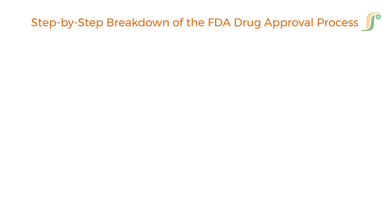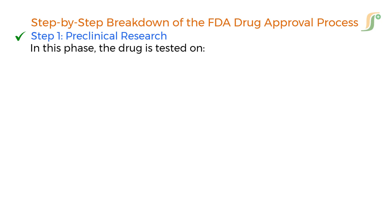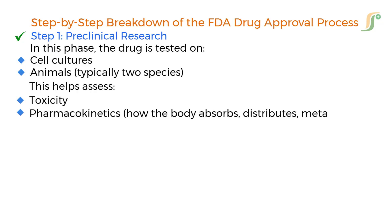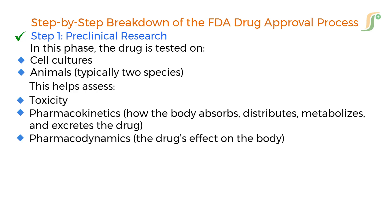Step 1: Preclinical Research. The journey begins with preclinical testing. In this phase, the drug is tested on cell cultures and animals — typically two species. This helps assess toxicity, pharmacokinetics (how the body absorbs, distributes, metabolizes, and excretes the drug), and pharmacodynamics (the drug's effect on the body). If the results show that the drug is reasonably safe to proceed, the sponsor prepares an Investigational New Drug application, or IND.